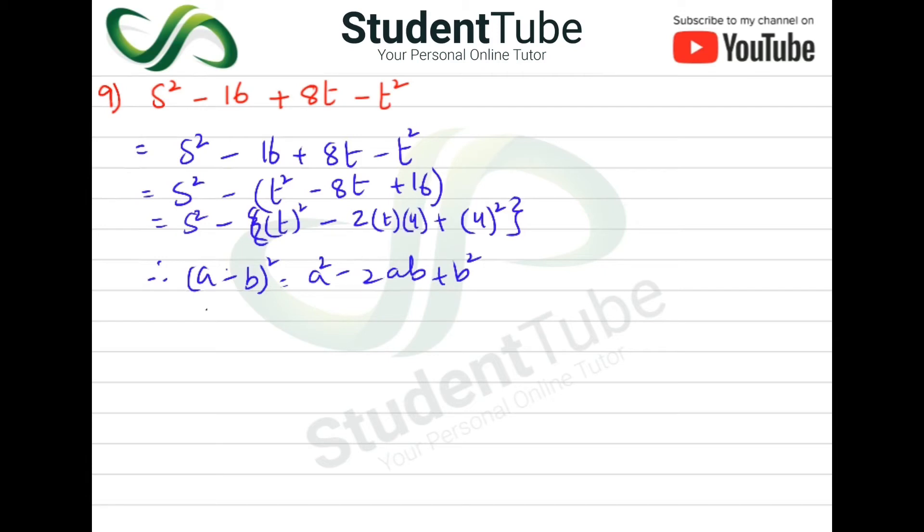So here s² will be minus, and here will come t is our a, and minus 4 square. So here again a formula is applied: a²-b² which is equal to a minus b and a plus b.